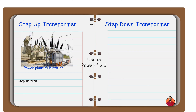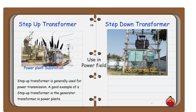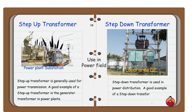A step up transformer is generally used for power transmission. A good example of a step up transformer is the generator transformer in power plants. A step down transformer is used in power distribution. A good example of a step down transformer is a transformer in residential areas.